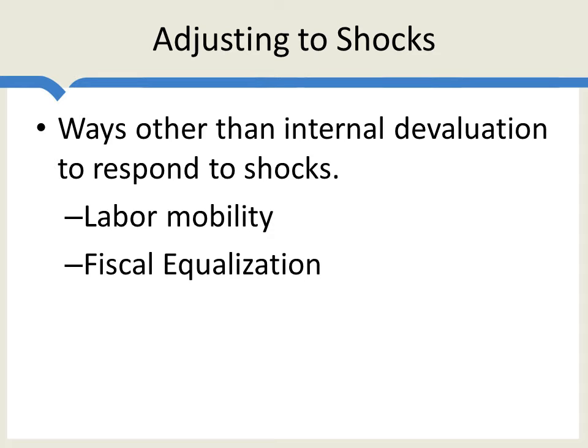Another way of ameliorating shocks is through fiscal equalization — spending money in the part of the common currency area where there's a recession. So when Texas goes into a recession because the price of oil falls, it's not very controversial in the United States to spend a lot more on unemployment insurance in Texas. It's much more controversial in the European Union for Germans to spend money on unemployment insurance for Greeks.